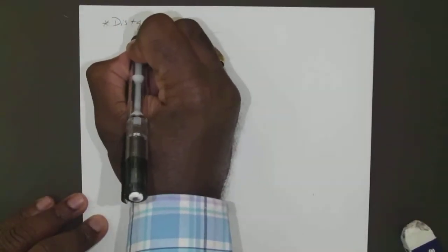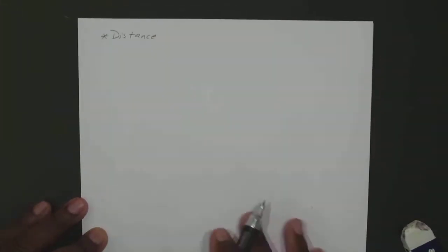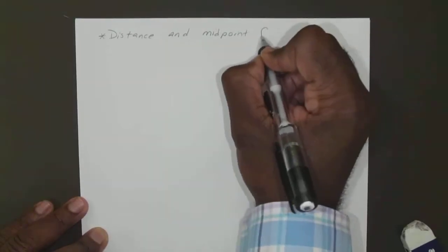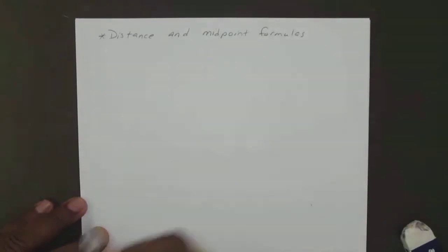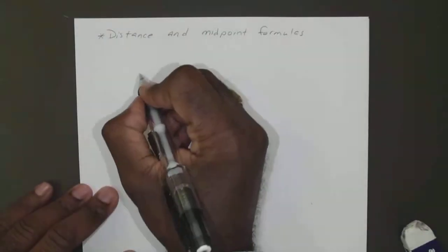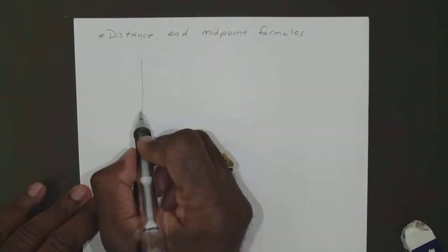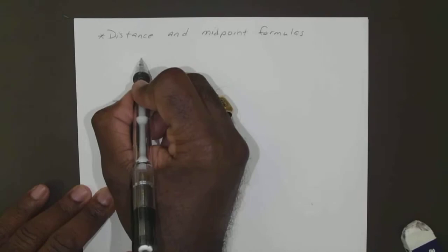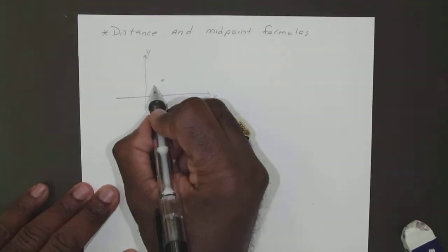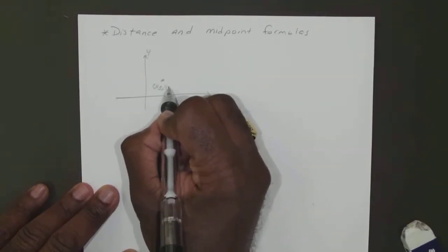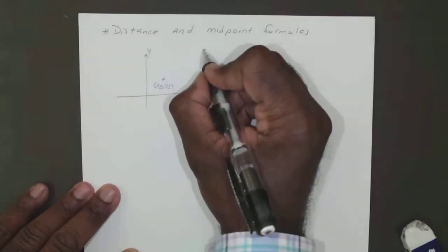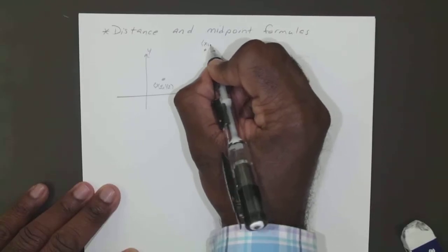Now we're going to look at the distance and midpoint formulas. So to find our distance formula, think of a graph. You have your x and you have your y. Let's say you have a point we'll call x1, y1, and you have another point up here we'll call x2, y2.